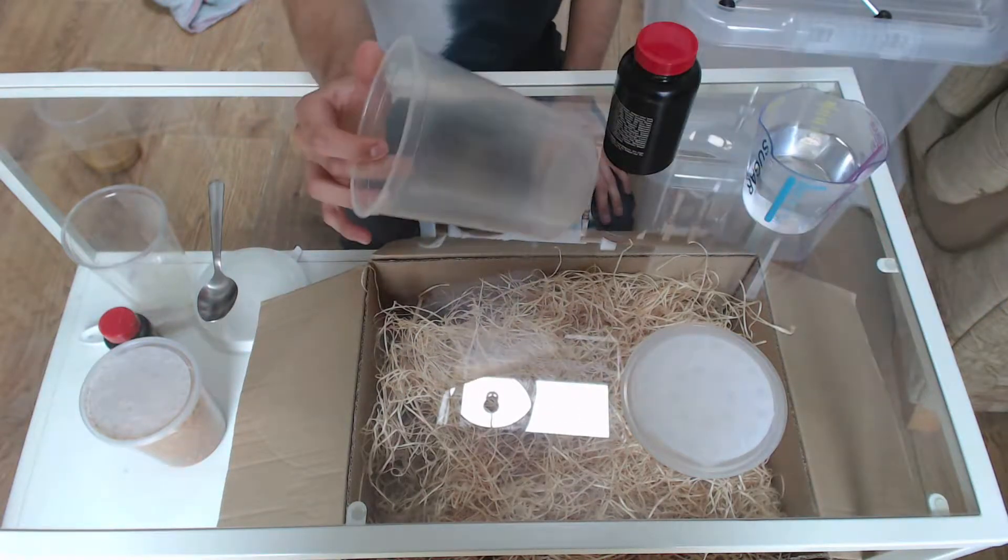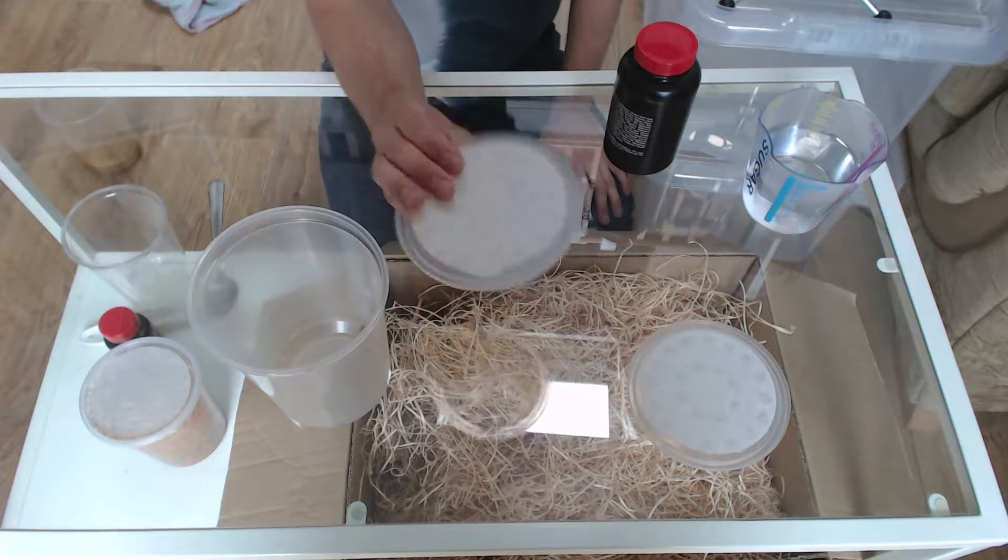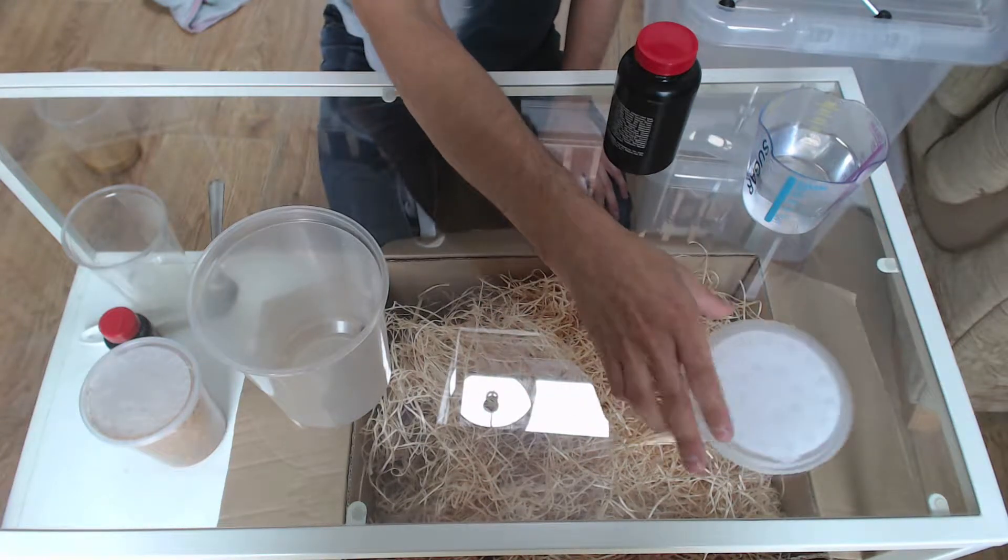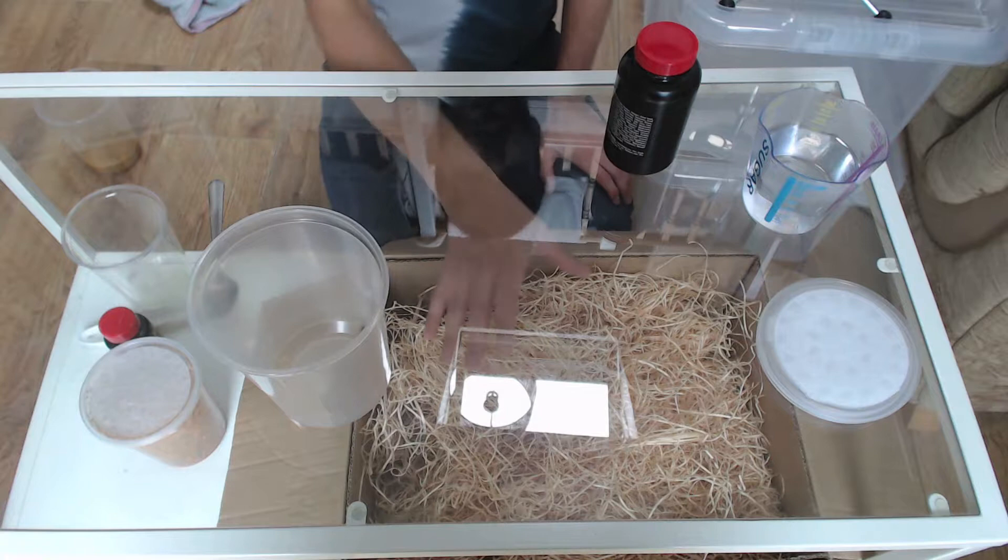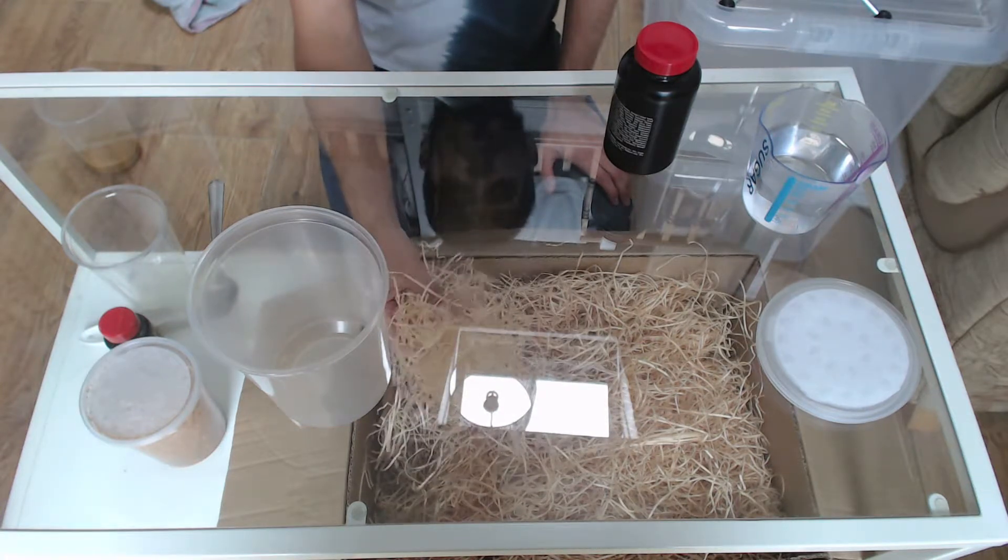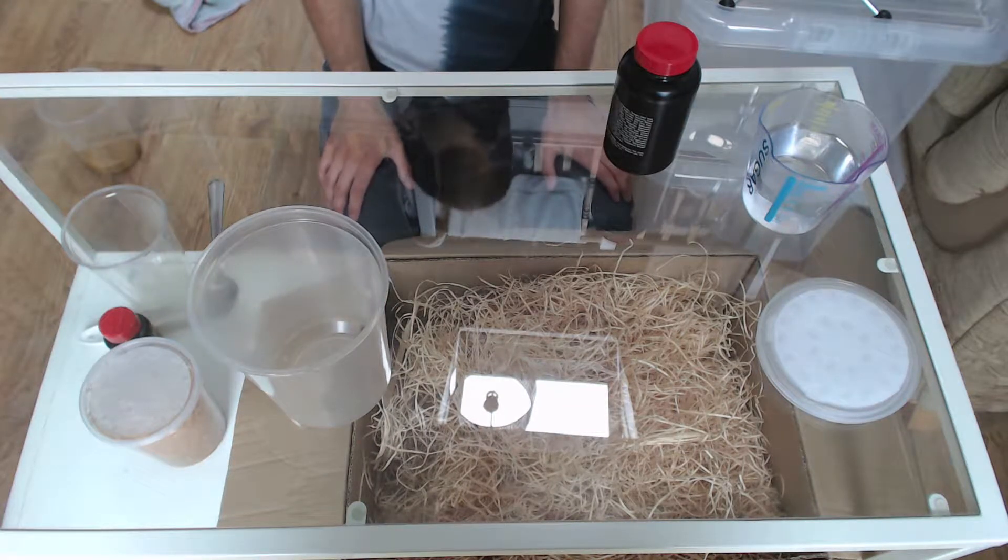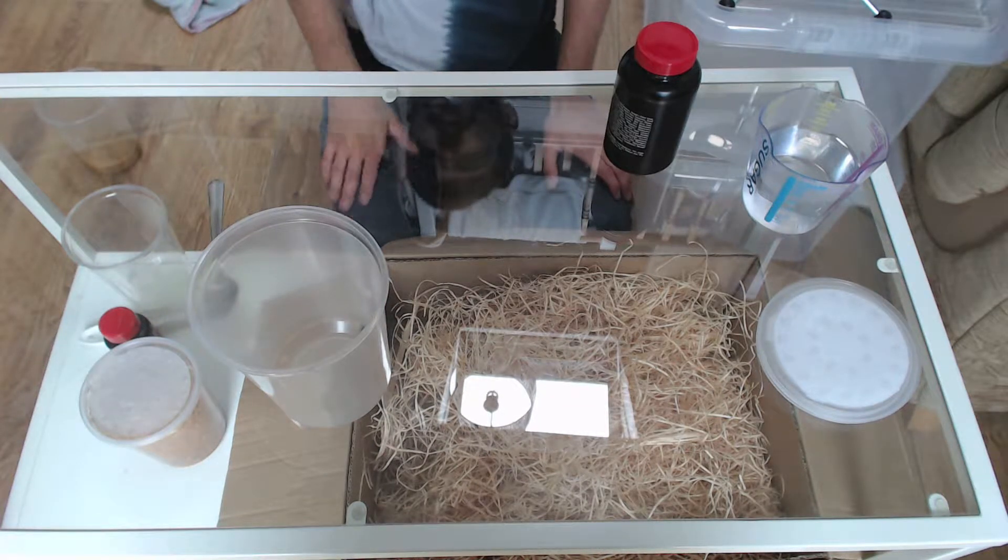Some 32 ounce deli cups like this and vented lids for those cups. I usually buy them with them, so that's fine. The other stuff, shredded wood, which I've got just under here. I think it's called Excelsior as well online. They're sort of the basics, so let's get started.